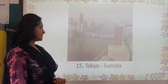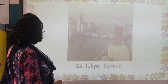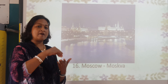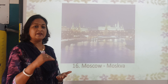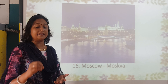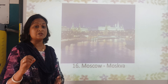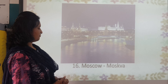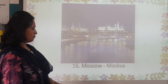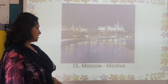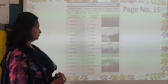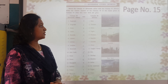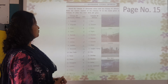The Sumida River is in Tokyo. Children, all these rivers have been connected with the help of a bridge, and the architecture of these bridges is also very unique and beautiful. Here you can also find another river — the Moscow River — and it is in Moscow.